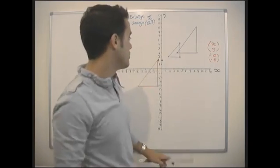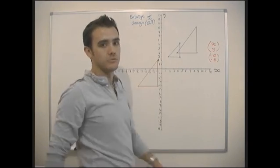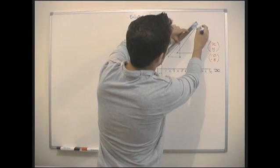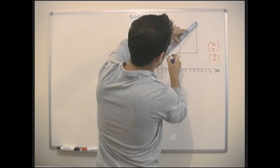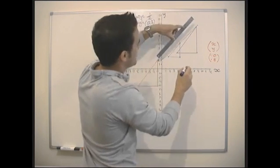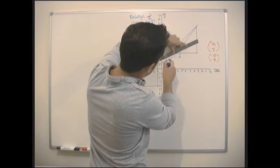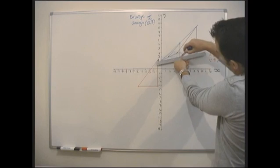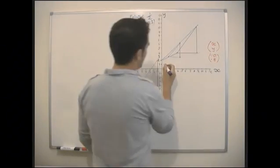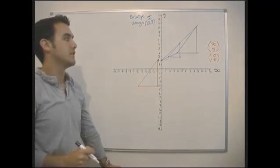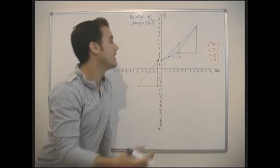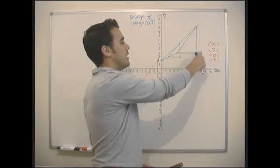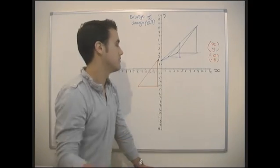If you're shown both shapes and need to find the centre of enlargement, it's even easier. You just get a ruler and draw lines through each pair of corresponding points. They all converge on the point where the enlargement was centred. The scale factor is just how much you need to multiply the original to get the new shape — a half, two, four, whatever it may be.